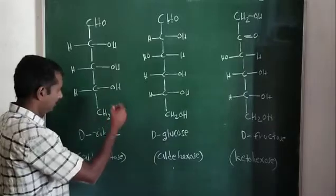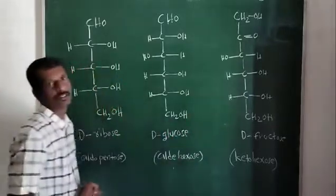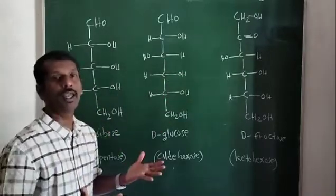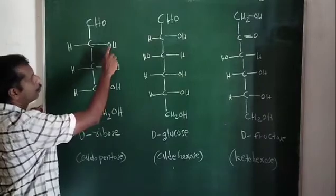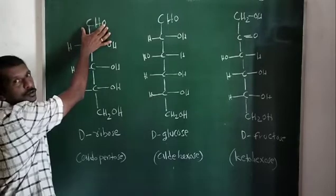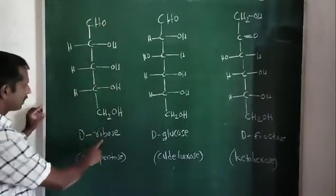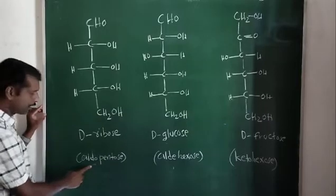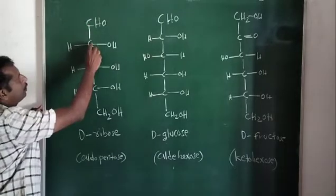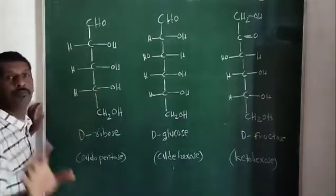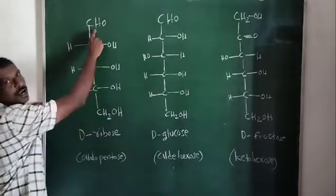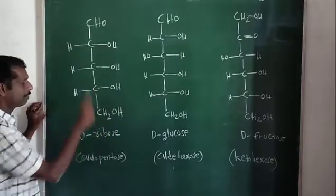Looking at the structures of ribose, glucose, and fructose: these are carbohydrates, meaning polyhydroxy aldehydes or ketones. In ribose, you can count the hydroxyl groups — 1, 2, 3, 4 — making it polyhydroxy, and there is an aldehyde group. Counting the carbon atoms: 1, 2, 3, 4, 5 — five carbon atoms means pentose. Because it also contains an aldehyde group, ribose is an aldopentose.